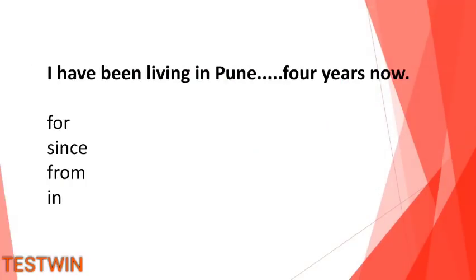"I have been living in Pune for 4 years now." This is present perfect continuous tense. The clue is "for 4 years" — a time period. "For" is used with a time period, while "since" is used with a particular point of time, such as a particular year or a particular day or month.